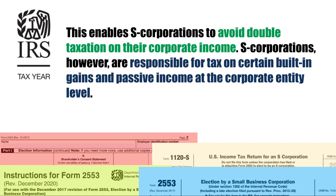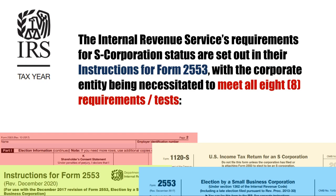S-Corporations, however, are responsible for tax on certain built-in gains and passive income at the corporate entity level. The Internal Revenue Service's requirements for S-Corporation status are set out in their instructions for Form 2553, with the corporate entity being necessitated to meet all eight requirements or tests.